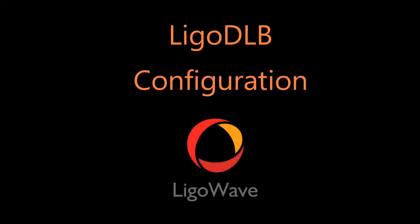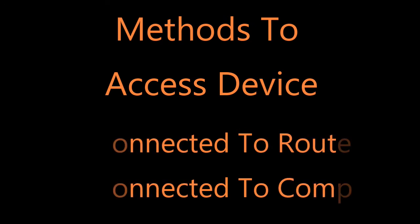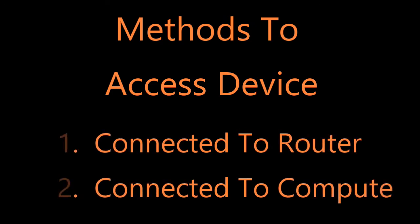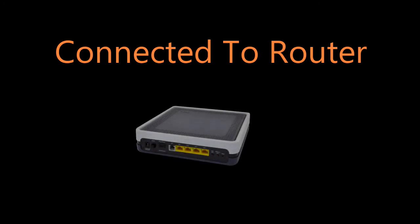LECO DLB configuration. Prior to installation, all devices must be configured. There are two ways to access the device: one is through a router, and two is through a computer. When a device is connected to your router, it will receive an IP address through your DHCP server.